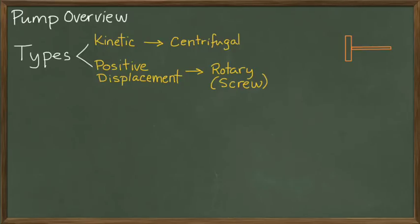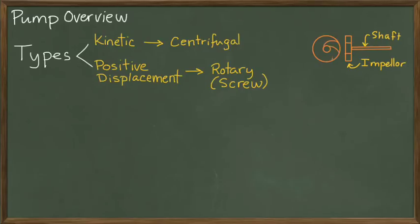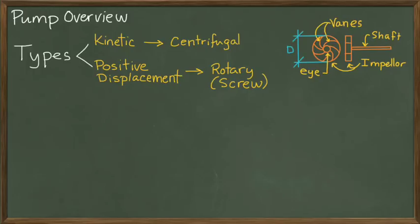A centrifugal pump includes a shaft and an impeller. Some work is done on the shaft to spin the impeller. If we look at a side view of the impeller, it looks like this — each one of these lines is a vane. Water comes into the impeller through the eye of the pump. When we talk about centrifugal pumps and their characteristics, we often want to know the diameter of the impeller — simply the diameter of this large circle with all the vanes mounted on it.